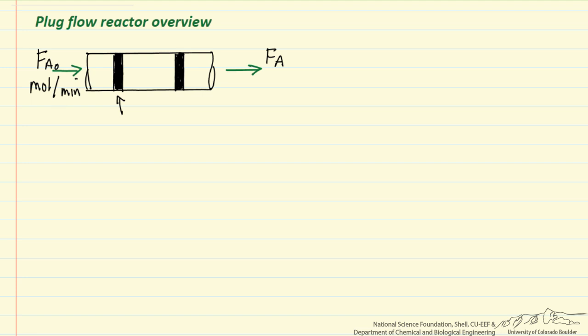It does not interact with the material in front of it, does not interact with the material behind it, but just moves along. So it looks the same as a batch reactor that spends a certain amount of time. Indeed the equations for a plug flow reactor are equivalent to the equations for a batch reactor.